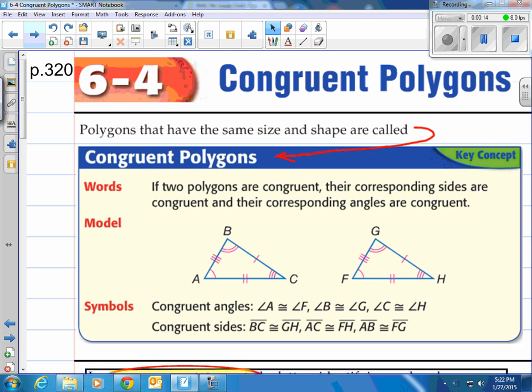First of all, polygons that have the same size and shape are called congruent polygons. Congruent is really the geometric symbol equivalent to the equal sign in algebra, and this is the actual symbol. It looks almost like the equal sign with a little squiggly on top. We use that in geometry to show equality.